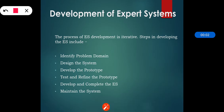We will see the development of expert systems in this section. The expert system is growing and used so widely because it gives us an exact user interface. The process of expert system development is iterative, and the steps involved are: identifying the problem domain, designing the system, developing the prototype, testing and refining the prototype, developing and completing the expert system, and maintaining the system.